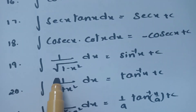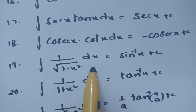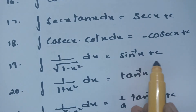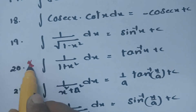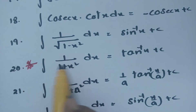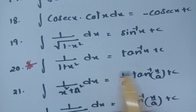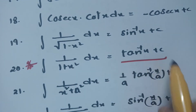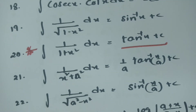Integral of 1/√(1 − x²) dx is nothing but sin⁻¹(x) — this is most important. Integral of 1/(1 + x²) dx is equal to tan⁻¹(x) plus c.